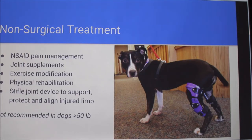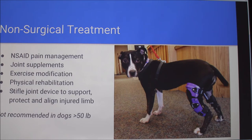If you choose conservative treatment, there are pain management and joint supplements to look into and discuss with your doctor. You'll have to modify the dog's exercise to prevent more damage. There's a lot of success with braces — they help support the injured limb — but it's not recommended for dogs over 50 pounds, as that's a lot of weight on an injured limb. It's also not recommended to push the treatment off if you're considering surgery, because the longer you wait the more difficult and damaging it will be. And that's all I've got — questions or comments?